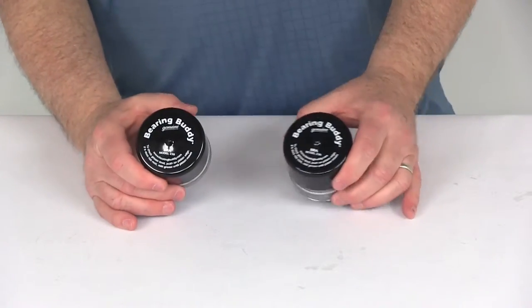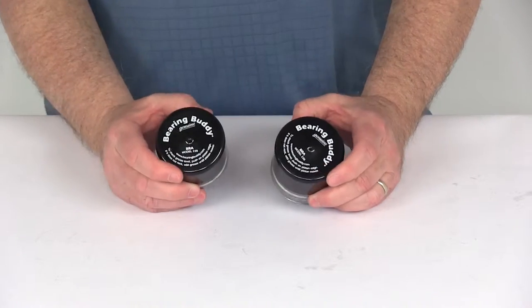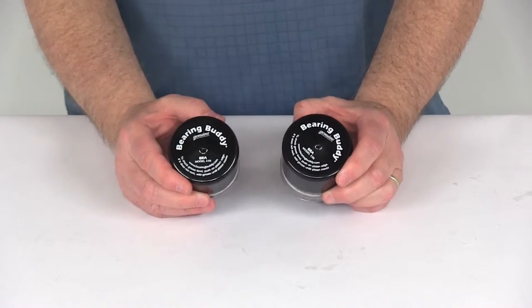Today we're going to take a look at the stainless steel bearing buddy bearing protectors for the 2.441 threaded hub borers, and this is for a quantity of two of them.